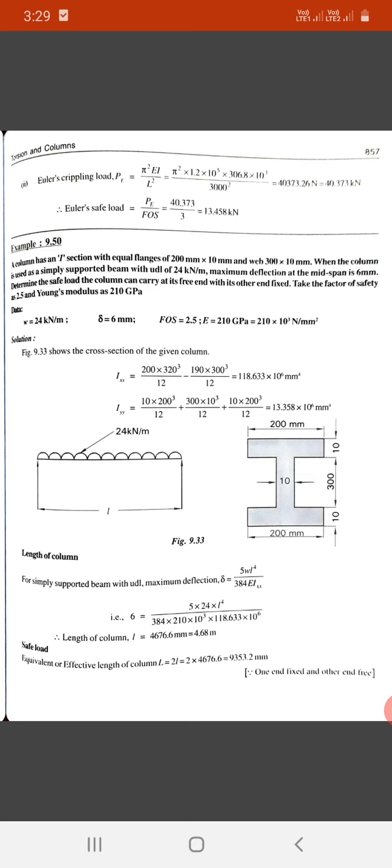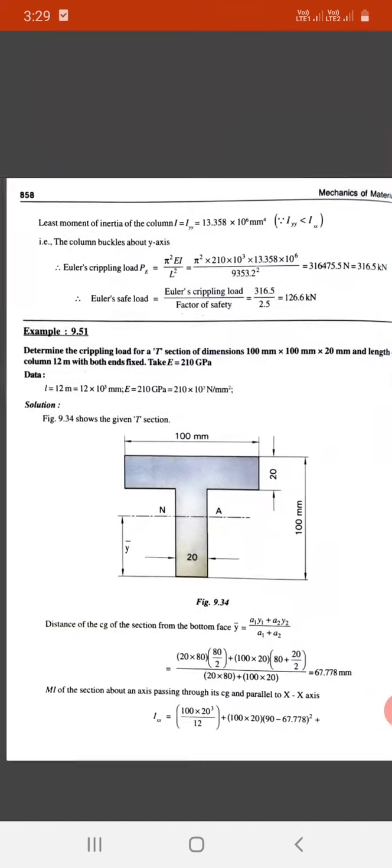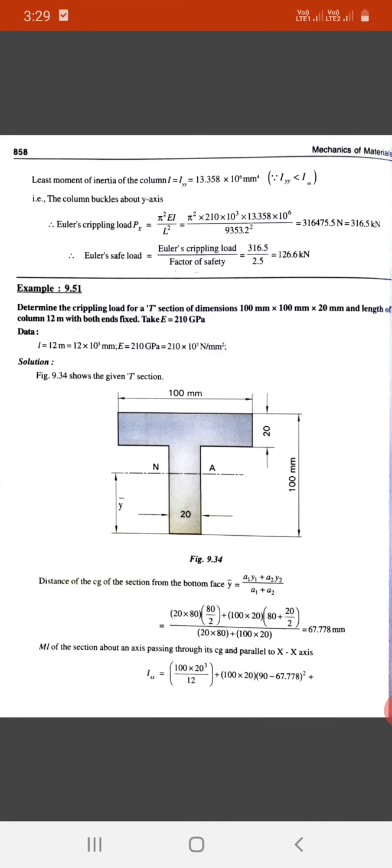Equivalent length Le equals 2L because one end is fixed and one end is free. So 2 into 4676.67 is 9353.2 mm. The least moment of inertia is Iyy, that is 13.358 times 10 to the 6 mm raised to 4.